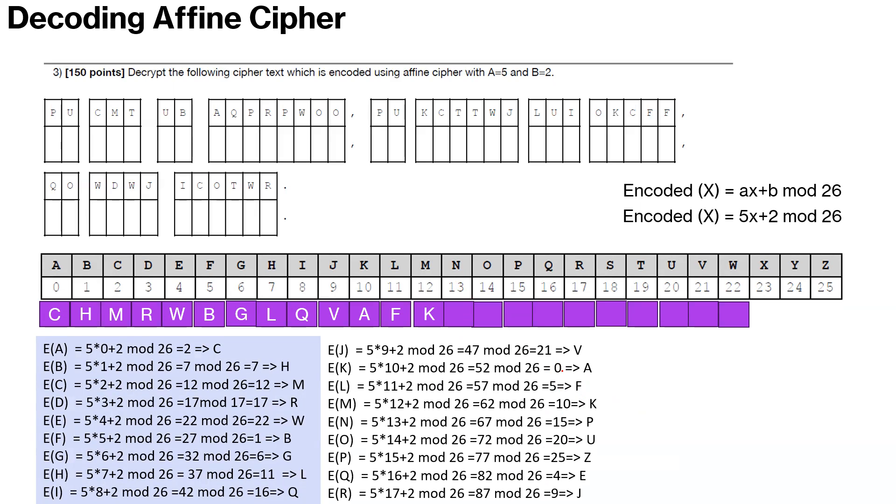We are up till M. M would be 5 times 13, 65 plus 2, 67. 67 mod 26 is 15. You also see here again we are moving 5 up here up till we hit 25, and then we go back.